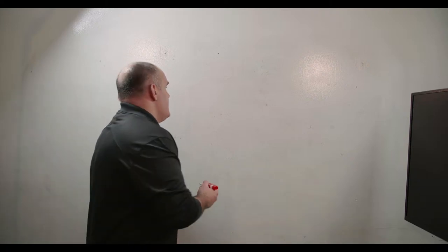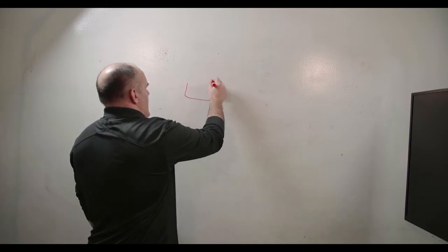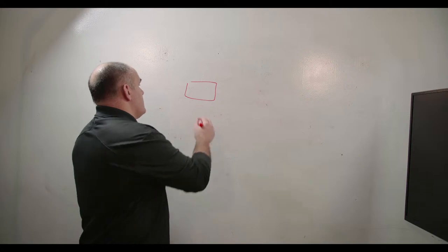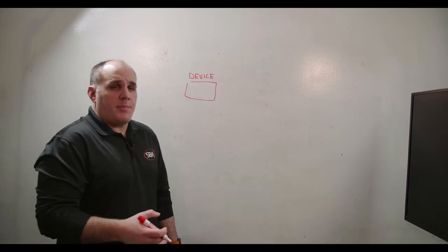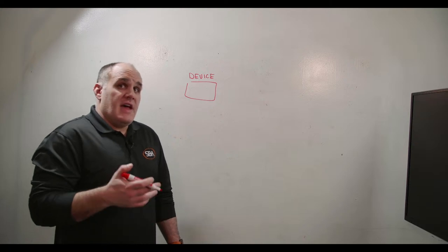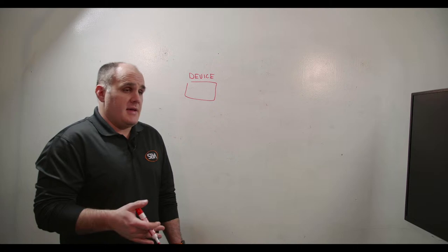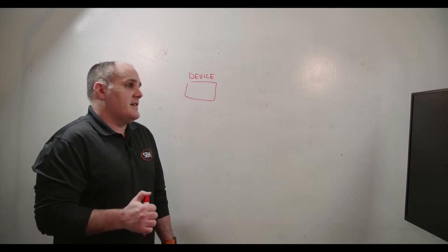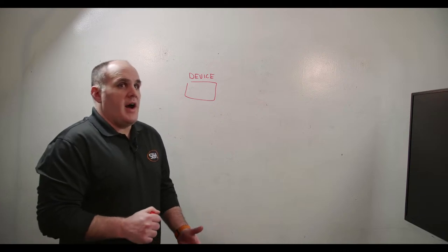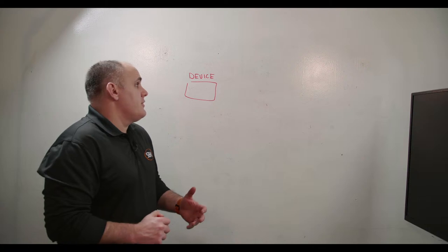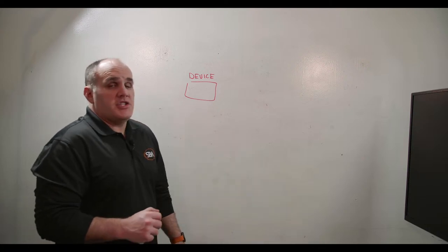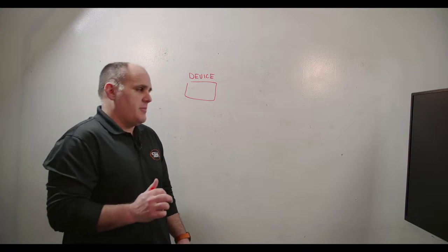BACnet is an object-oriented model. For those of you who don't understand what an object-oriented model is: we have object types. The primary object type in BACnet that we're mostly concerned with is called the device object. I'm going to be teaching you about object types, properties, and services. I won't be talking about BACnet MS/TP and BACnet IP in this video. A lot of the issues I see — especially in integration — have to do with people not understanding the BACnet object model.